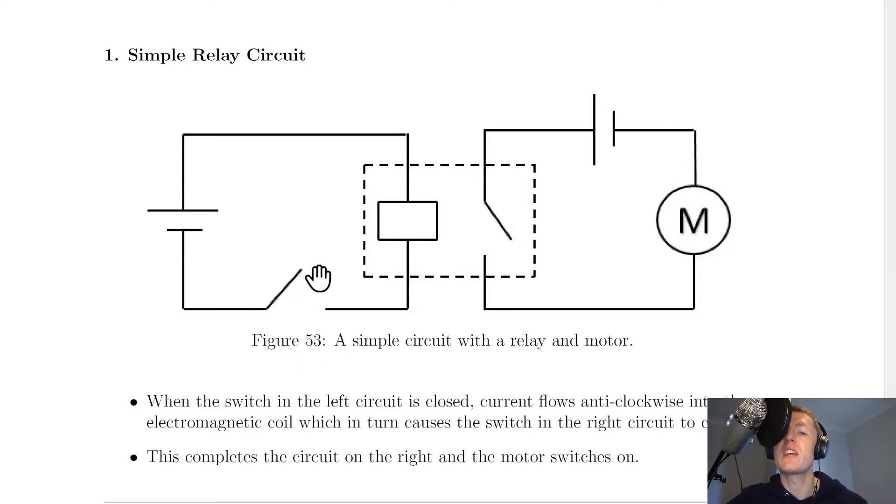So what happens is when the switch on the left-hand side circuit is closed, then that completes this circuit. And that means the current can flow from the negative terminal around and up through the electromagnet, and that then closes this switch attached to the second circuit.